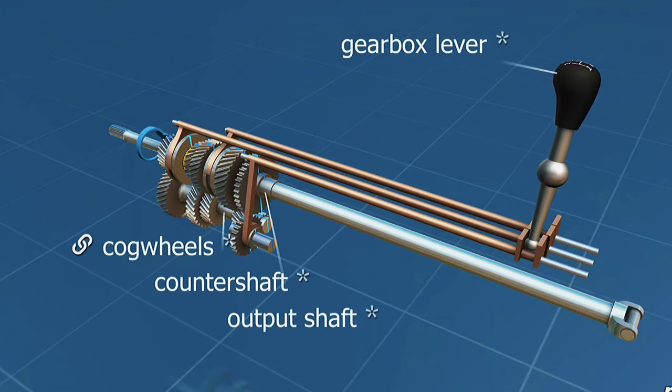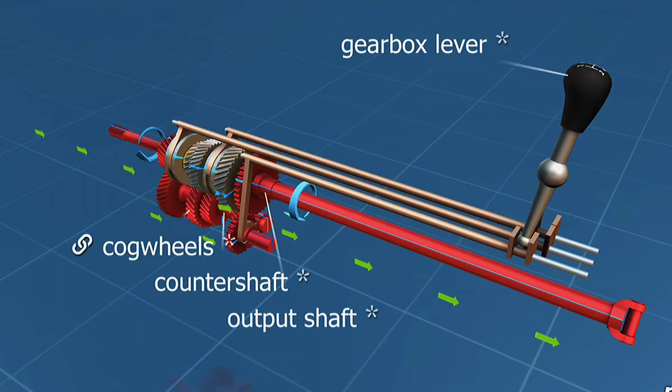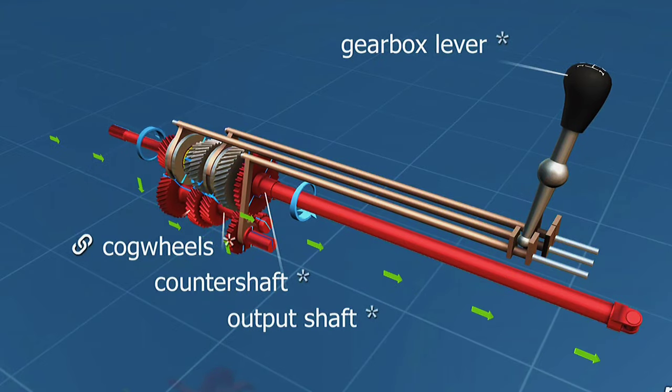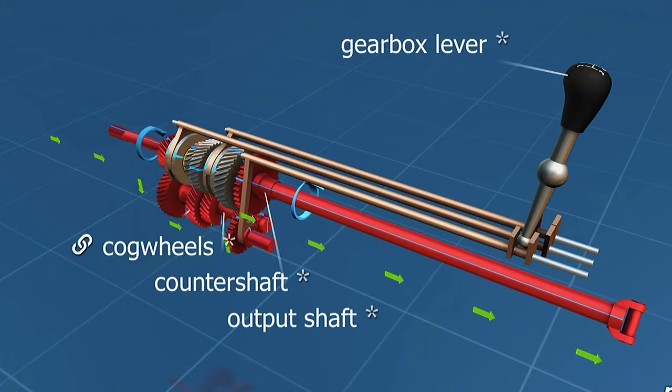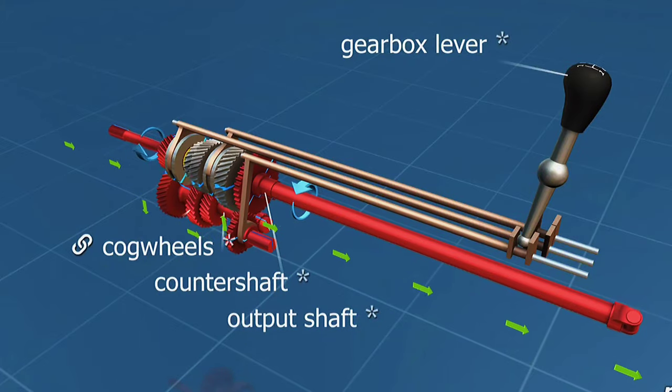In reverse gear, an additional gear is applied between the last gears on the lay shaft and the spline shaft. It changes the rotational direction of the output shaft, moving the vehicle backwards.